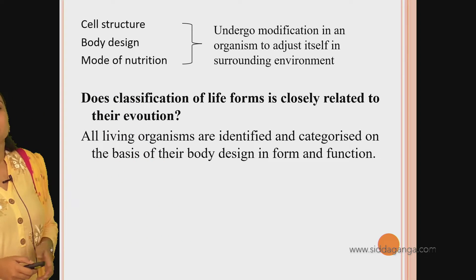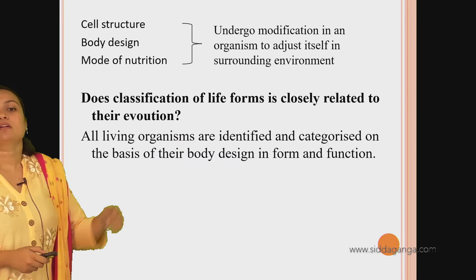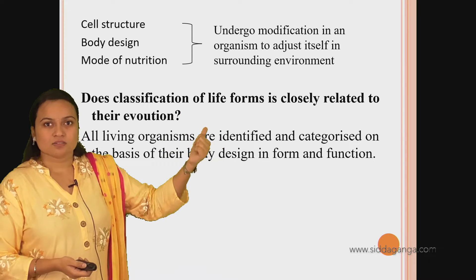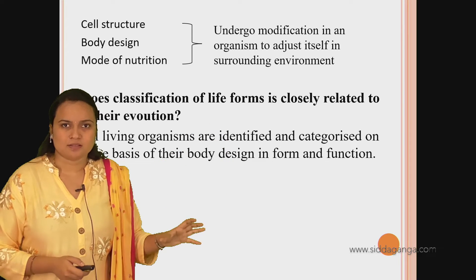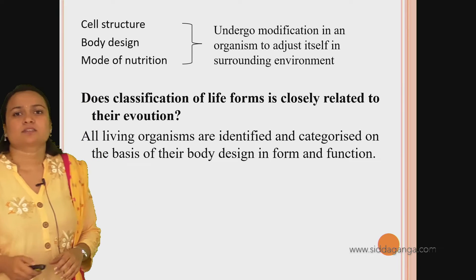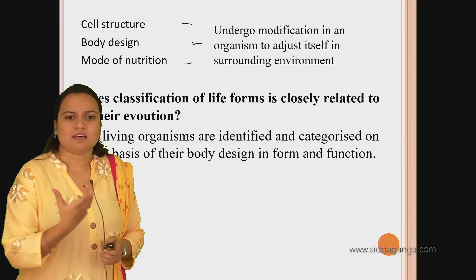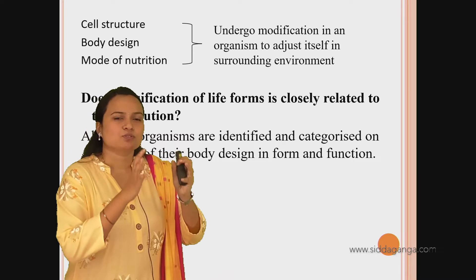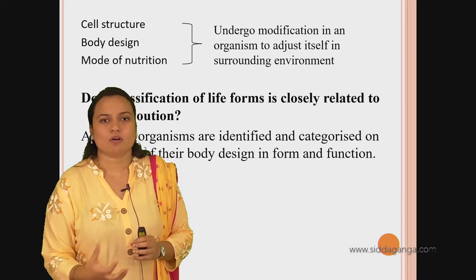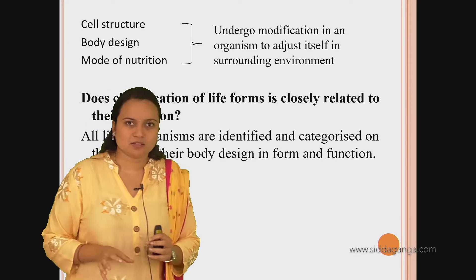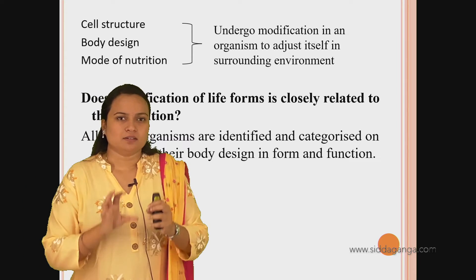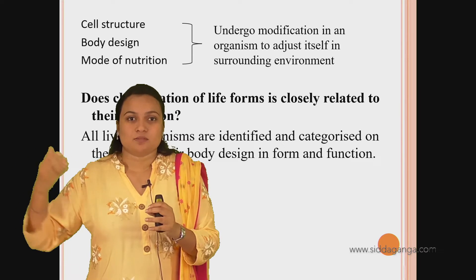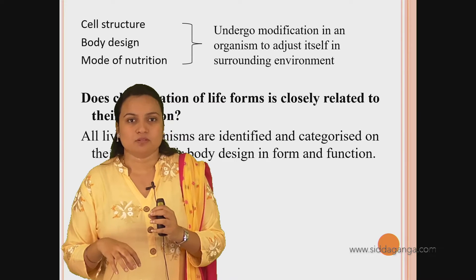All living organisms are identified and categorized on the basis of their body design in form and function - their appearance and function. You identify an organism based on their appearance - like dog, cat, rat. Their body designs are different in form and function. When evolution takes place, it will form a new species with specific characters, and on the basis of these initial characters, further characteristics are evolved.